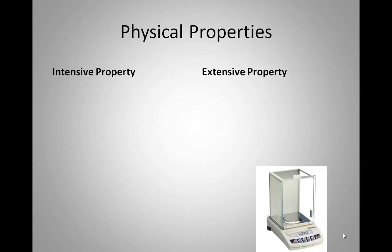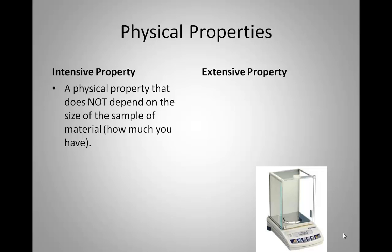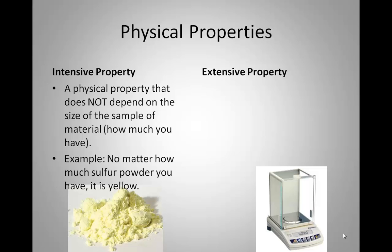There are two different types of physical properties: intensive properties and extensive properties. An intensive property is a physical property that does not depend on the size of the sample — in other words, how much you have. No matter how much of a substance you have, the intensive properties are not going to change. For example, no matter how much sulfur powder you have — whether a pea-sized amount or enough to fill an entire classroom — it's yellow.